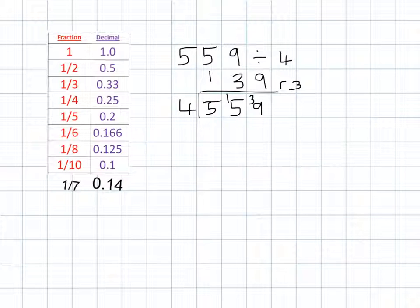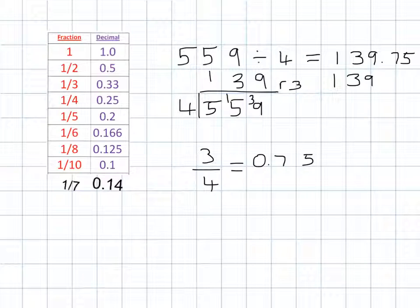Now, if you know your 25s and your quarters, this is quite an easy remainder to work out as a fraction. With it being a remainder of 3 and it's the 4 times tables that we're dividing by, we've got 3 quarters and you should know straight away that that is worth 0.75. Remember with your reference that 1 quarter is worth 0.25. So 559 divided by 4 is 139.75.